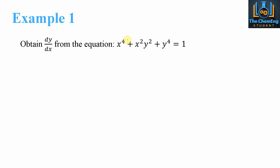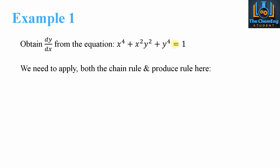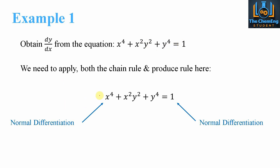The first term differentiates as standard. For the middle term, we have to apply the product rule because when we differentiate y we need to express it in terms of x. For the y⁴ term on its own, we apply the chain rule. And then we differentiate the constant 1 as standard. So we have normal differentiation for the first term, then the product rule combined with the chain rule wherever we have y, and then the chain rule for y⁴.